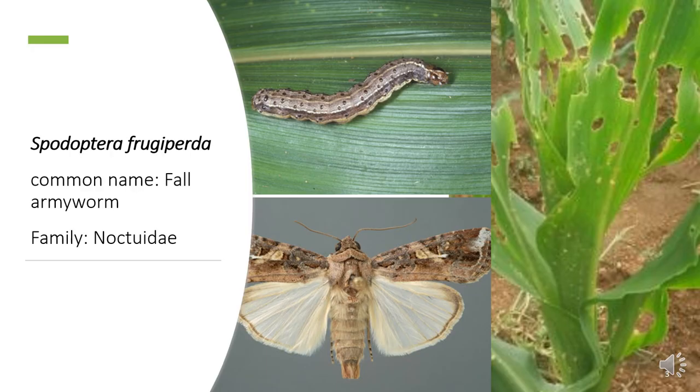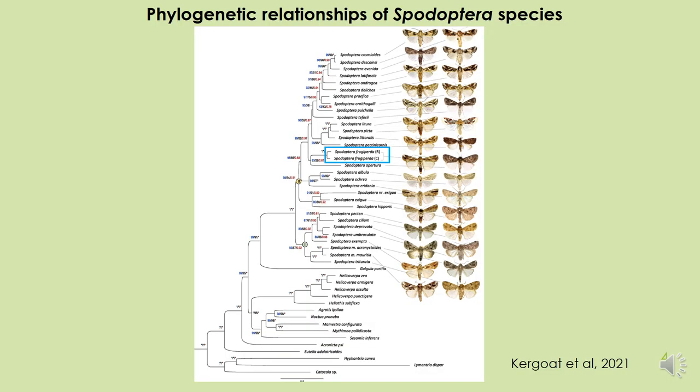Spodoptera frugiperda is also known as the fall army worm, its common name, and it belongs to the family Noctuidae. Kirkwater et al. in their 2021 paper showed that the genus Spodoptera has 31 species. Looking at this phylogenetic tree, we can see the fall army worm with its two strains: the corn and the rice strains.